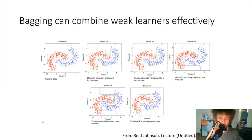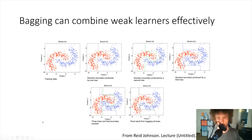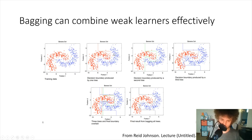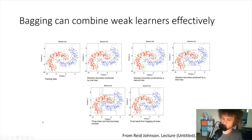Here's an example from Reed Johnson at the University of Notre Dame using the banana dataset — a synthetic dataset with a very interesting decision boundary shape. The idea is that we can make a series of weaker models, each a single decision tree trained on a different sample of the original data. Some individual trees look strange, but once we combine them we get a decision boundary that does a really good job of classifying the data. There is some overfitting effect from heavy sampling, which we'll discuss more when we talk about bias.